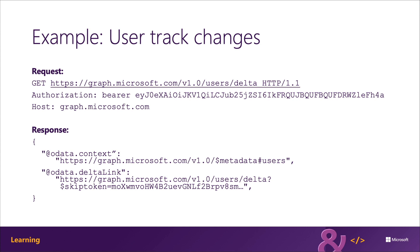Let's look at a sample request. The following request gets a list of all the users from Microsoft Graph — you can see I'm going to slash users slash delta. The first time this gets submitted, you get a full list of all the users in the directory. Notice the response includes the Delta Link URL. If there are multiple pages of data being returned, the Delta Link is always going to be on the last page.